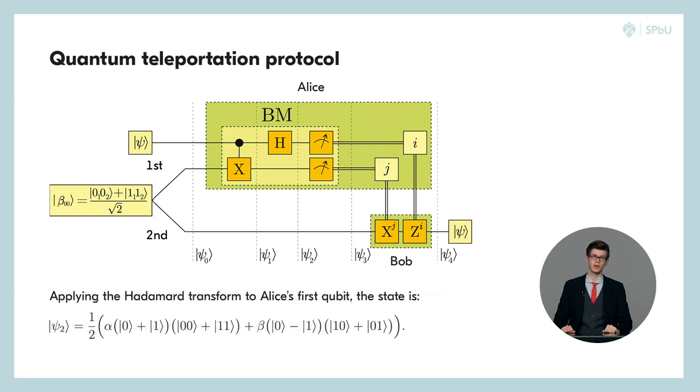The next step. Now Alice has to perform the Hadamard transform on her first qubit which is in the state psi. Since the state psi is the superposition of the states 0 and 1, the transform will result in the zero state being turned into the sum of states 0 and 1 and the state 1 being turned into their difference as it is on the slide.